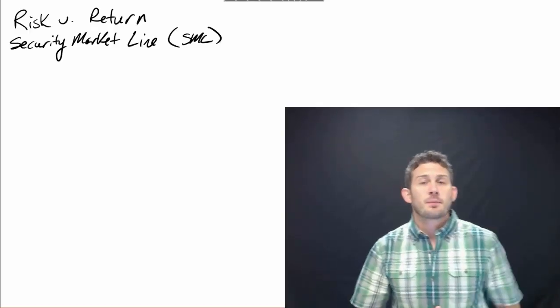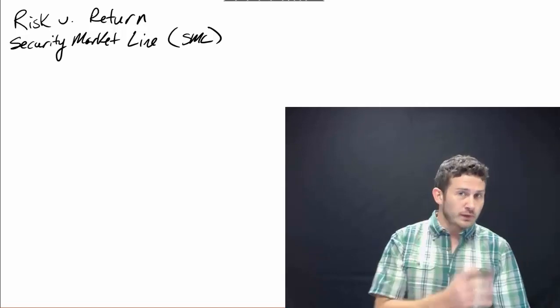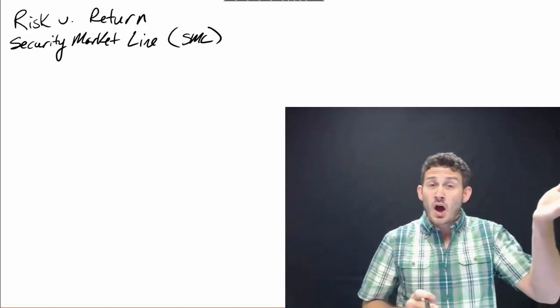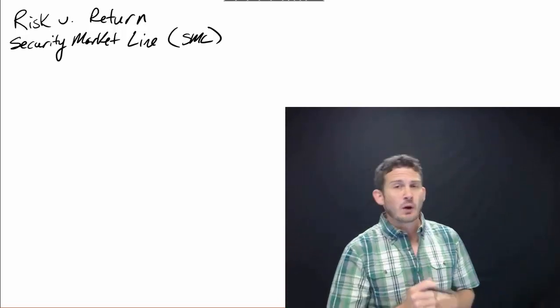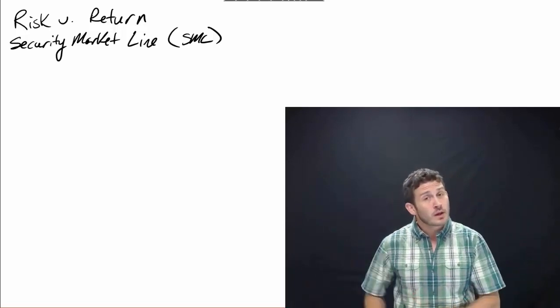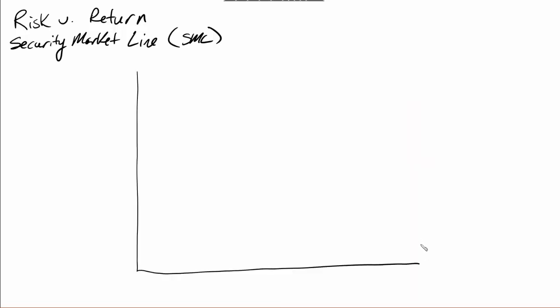With the basic risk-return relationship, we are able to graph the relationship between risk and return in CAPM over this notion of a security market line. Along our horizontal axis is going to be beta — that's our risk — and along our vertical axis we have R, which is our required return, denoted in percentage points. We have a dashed horizontal line running across here which is our base, and this is the risk-free rate.